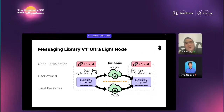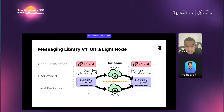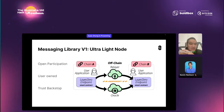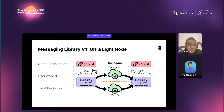And then the Ultralight Node. The Ultralight Node is the first version of the messaging libraries. It has three very important properties. One is open participation. In the Ultralight Node, we have two major roles: one is the oracle and the other one is the relayer. The oracle is just like a light node — it relays the block headers, and the relayer provides some sort of proof for the inclusion of the transaction in the block header to the other side. But then it's totally user-owned. The app, the user application, can choose anyone to be your oracle and your relayer.